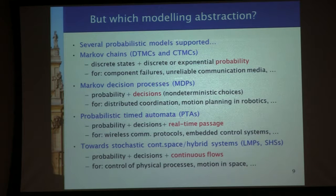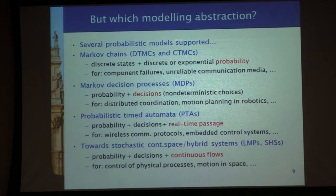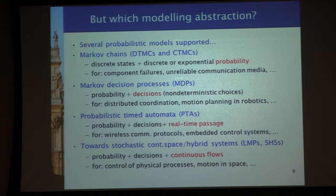What I want to do with this talk is question the work I've done in the past from the point of view of the new application in mobile robotics. So far, we have worked with models which are Markov chains — I have discrete states and I jump between them according to probability distributions, which could be discrete or continuous. Exponentials are continuous, but there are no decisions — everything happens probabilistically in those systems.